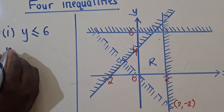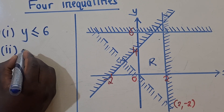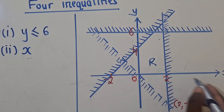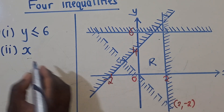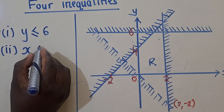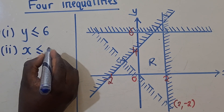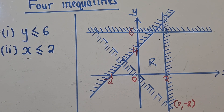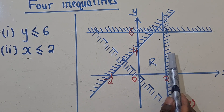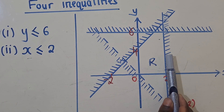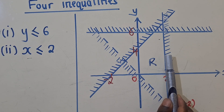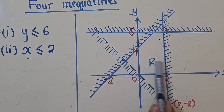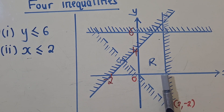I'll come to this one — this is inequality 2. This is the x-axis, of course. It's cutting the x-axis at 2, so we say x is less or equal to 2. It's passing at 2 on the x-axis, and when we check, the side which is not shaded is the less side of the x-axis. So we shall say less or equal to.